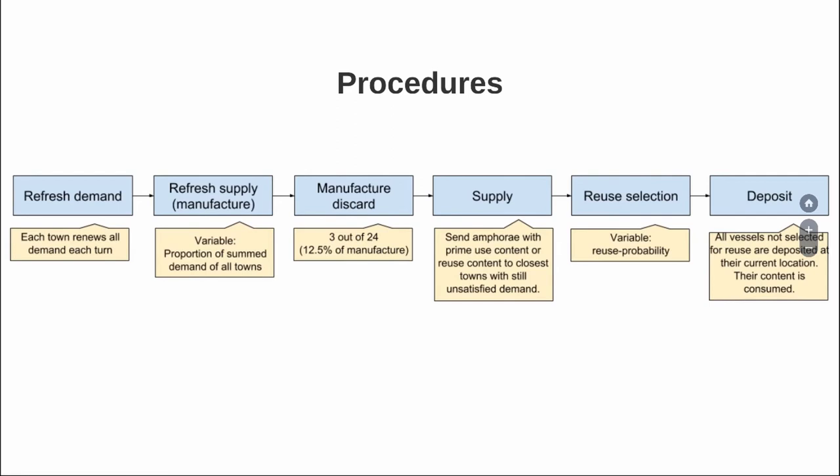The model is very simple. Initially I create a demand for a product correlated to the population. I generate a supply, which is the production. Then there is a discard of that production — a proportion taken from Ted Peña's model. Then amphorae are sent to places that still have an unsatisfied demand for products. Then, depending on the settings of the experiment, a reuse selection of amphorae will happen — at a port with a 50% or 100% probability, depending on the experiment. All the amphorae that are transported in that turn and are not selected for reuse are deposited. This is how I get distributions of pots and also distributions of foodstuffs — simulated ones.